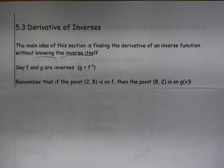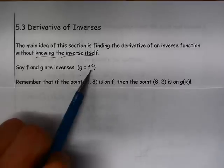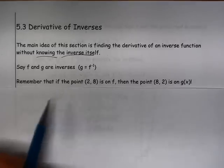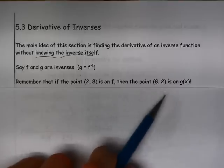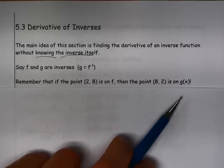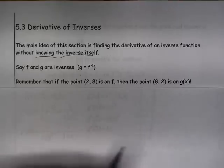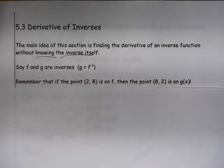So we're going to say that f and g are inverses. g is the inverse of f. And remember that if the point (2,8) is on f, then the point (8,2) is on the inverse of f. So we just switch the x and the y values.